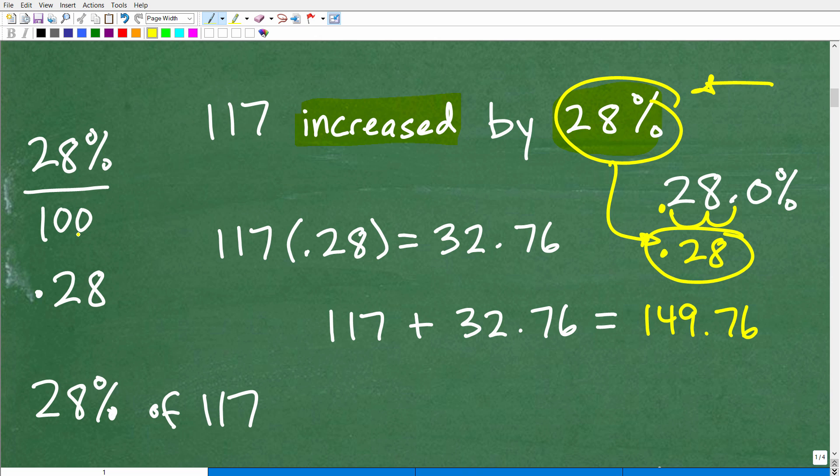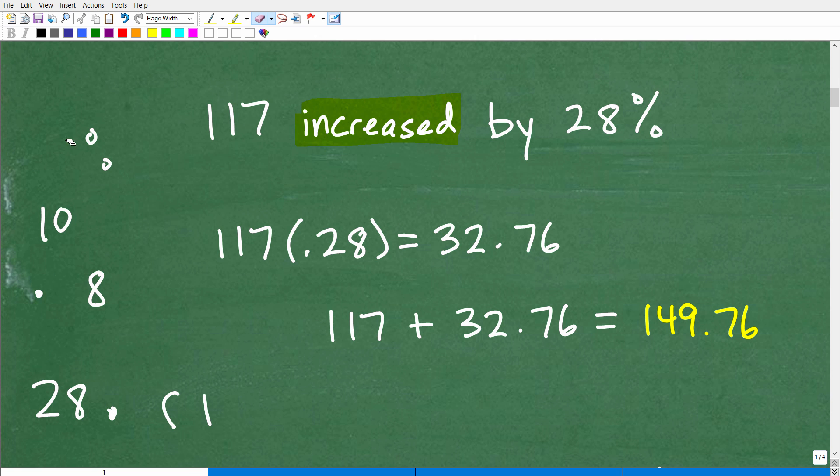Again, it's the same thing as dividing by 100. All right, whatever way you remember it is, you know, the best way for you. Okay, so there's two approaches here. Okay, so again, the first thing we want to do is figure out what 28% of 117 is. So I'm going to take that 28%. That's going to be 0.28. I'm going to multiply by 117. So 28% of 117 is 32.76.